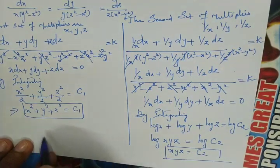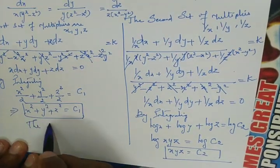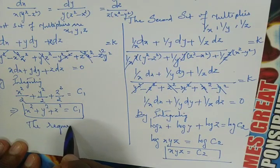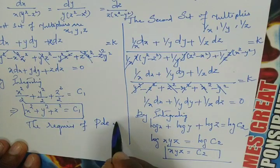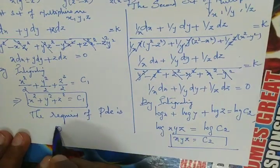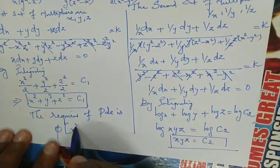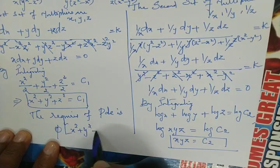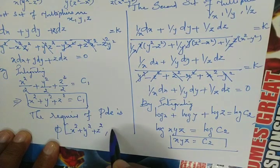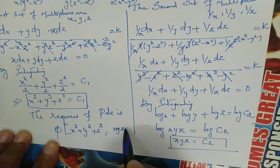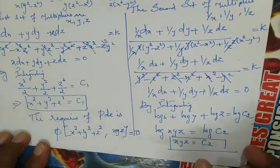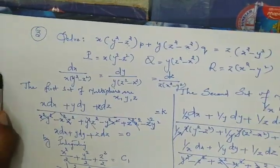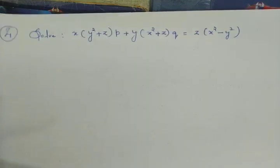Combining both results, the required general solution of the PDE is φ(x² + y² + z², xyz) = 0. Now we continue with the fourth problem using the Lagrangian multiplier method.